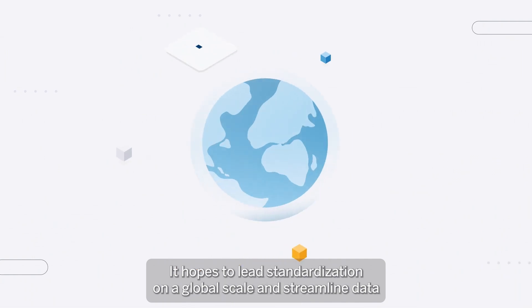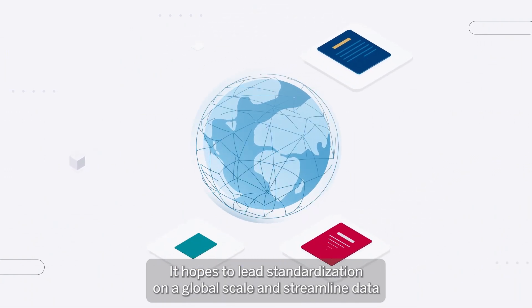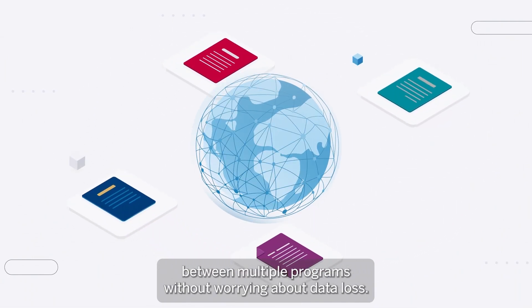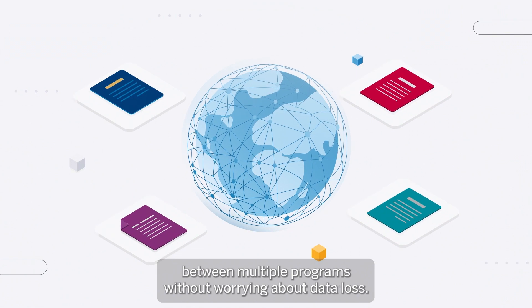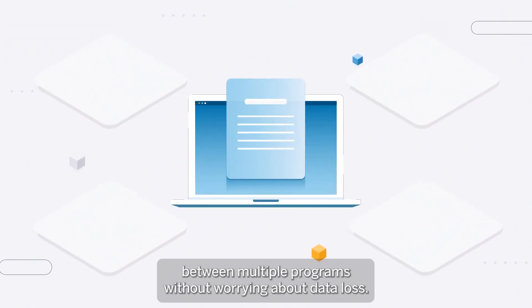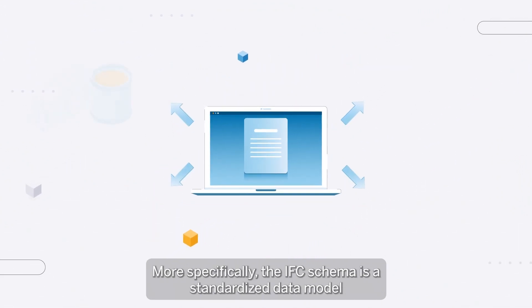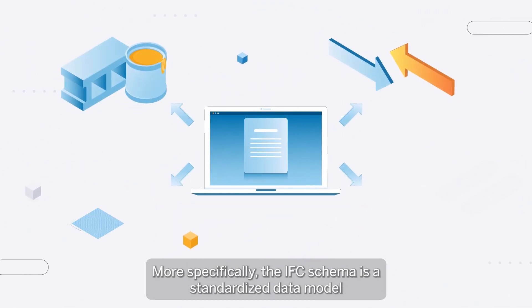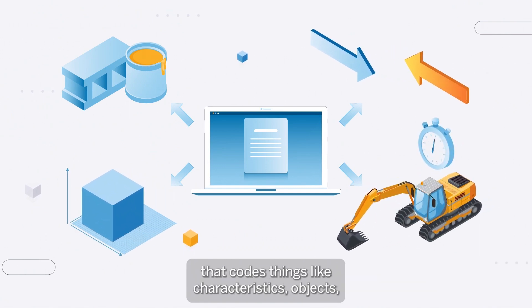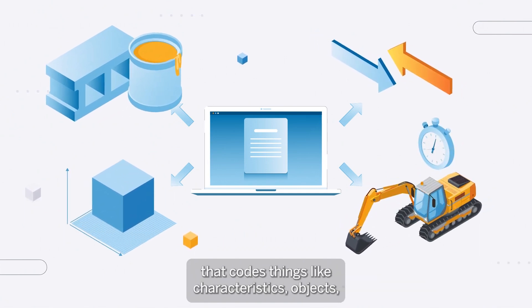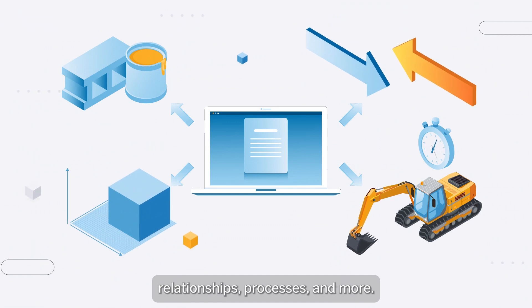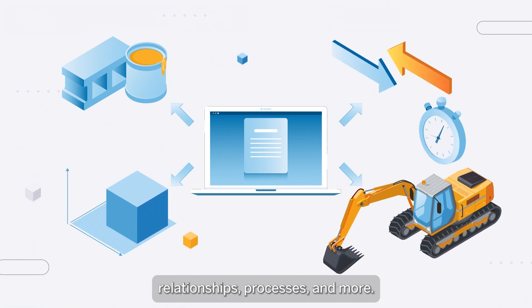It hopes to lead standardization on a global scale and streamline data between multiple programs, without worrying about data loss. More specifically, the IFC schema is a standardized data model that codes things like characteristics, objects, relationships, processes, and more.